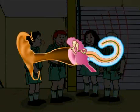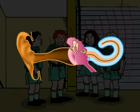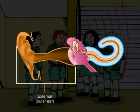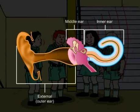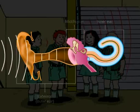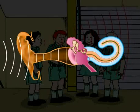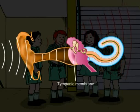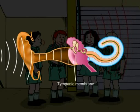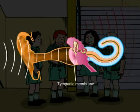The ear is mainly divided into three parts: the external or outer ear, the middle ear, and the inner ear. Sound waves enter through the external ear and strike the tympanic membrane, causing it to vibrate.